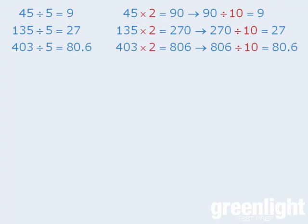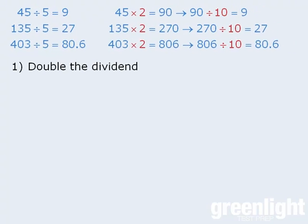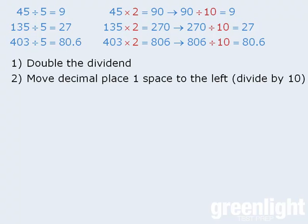Okay, we're now ready to formalize the technique for dividing by 5 in our head. The steps are: first take the dividend and double it, then take the result and divide it by 10, which can be accomplished by moving the decimal place one space to the left.